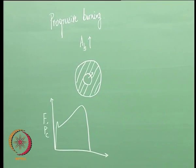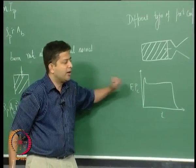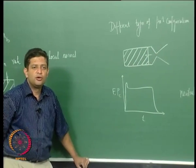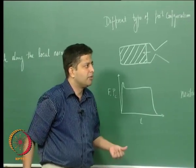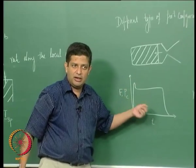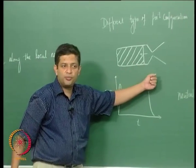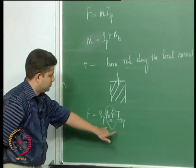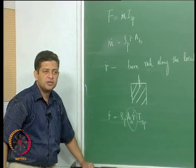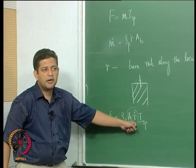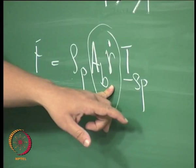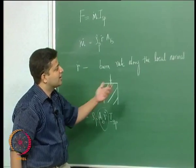Now if you look at all these configurations in terms of propellant loading, end-burning will have the highest propellant loading because you are utilizing the entire volume. But if you want a large burning surface area, the burn rate will need to be lower and loading will also be lower. Coming back to the thrust equation, if A_B is limited as in the case of end-burning, then you have to have a very high R-dot to achieve the required thrust. Although propellant loading is higher, the burn rate requirements are very, very high. Therefore these kinds of configurations are seldom used.